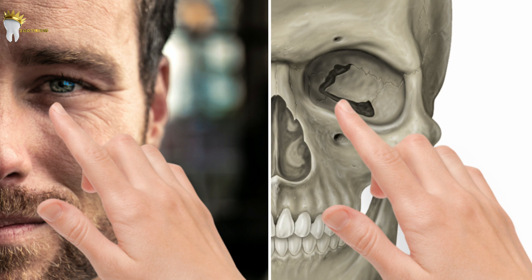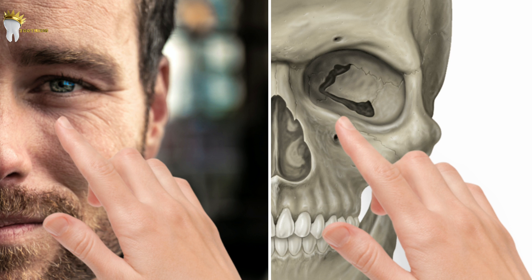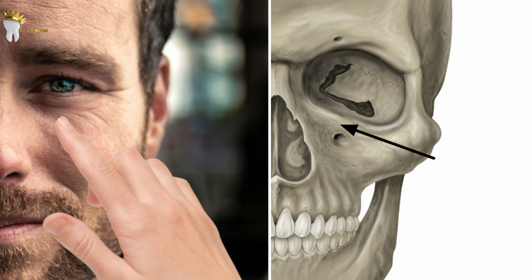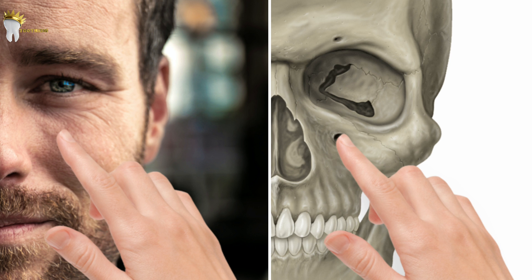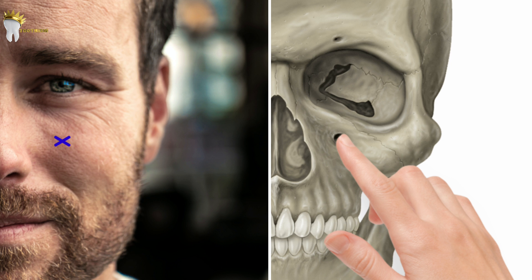Now we locate the infraorbital foramen by palpating certain landmarks. First, we palpate the infraorbital notch. Then, while applying gentle pressure to the tissues, we move the finger downwards. Immediately inferior to this notch, we will feel an outward bulge — this is the lower border of the orbit and the roof of the infraorbital foramen. As we move the finger further downwards, we will feel a concavity or depression — this is the infraorbital foramen. We must be very gentle while palpating, as the patient will feel some soreness. Once found, keep the finger there or mark the area over the skin.